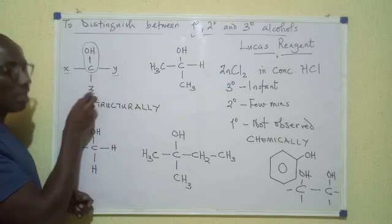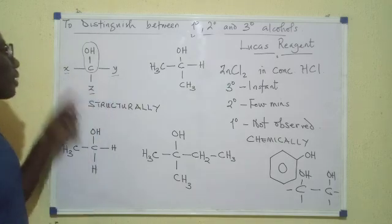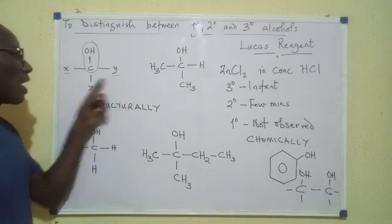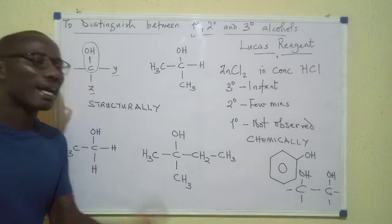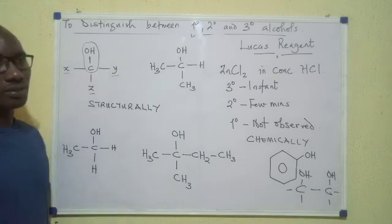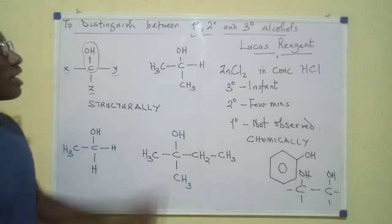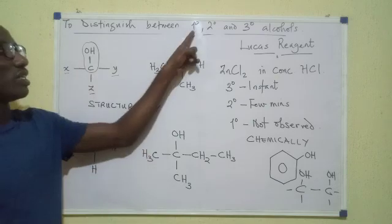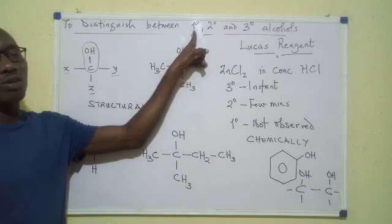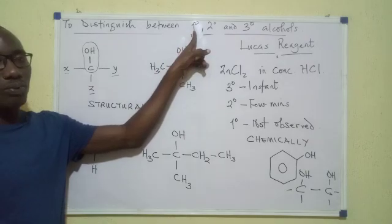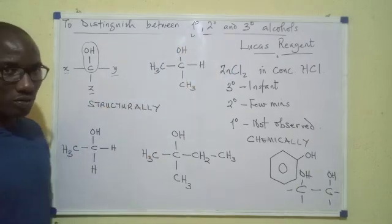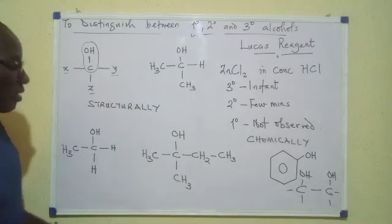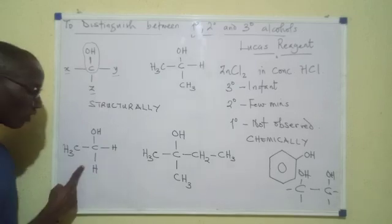Those three remaining bonds lead us to atoms X, Y, and Z. The question is: of X, Y, and Z, how many are carbon atoms? If only one is a carbon atom, it's a primary alcohol. If two are carbons, it's secondary. If all three are carbons, it's tertiary.